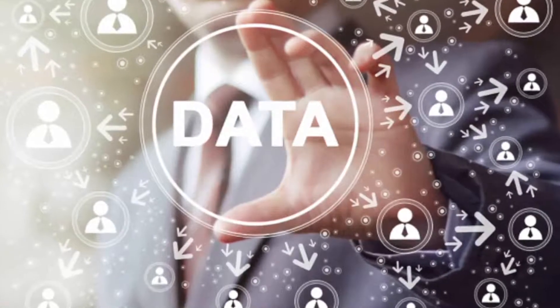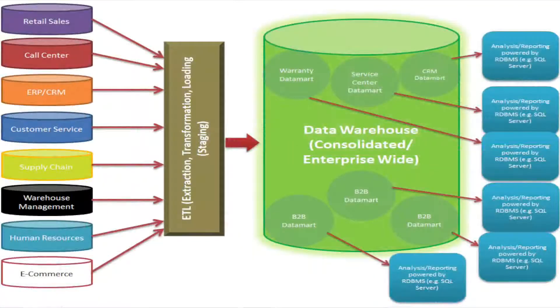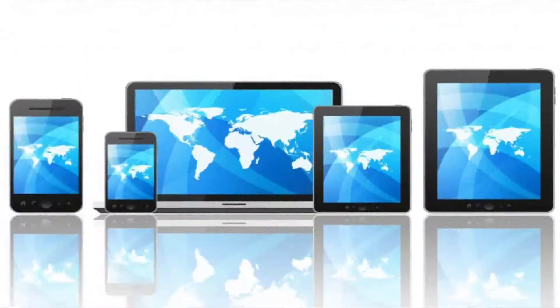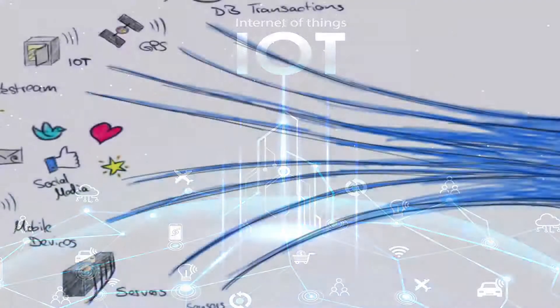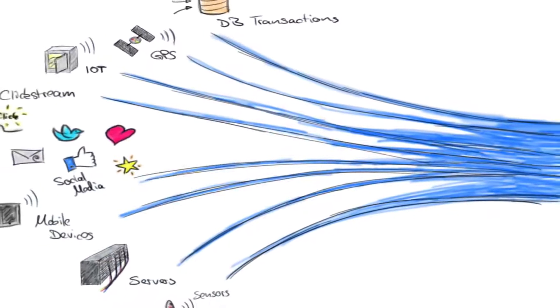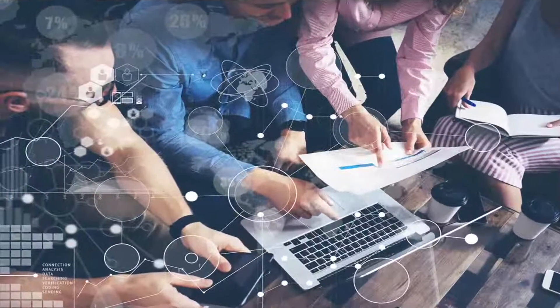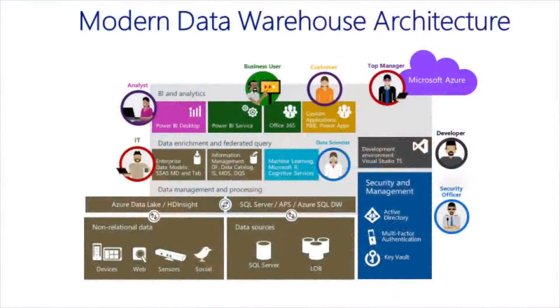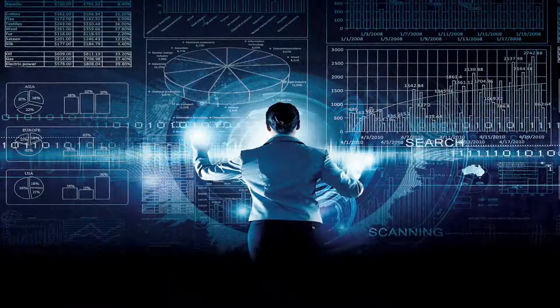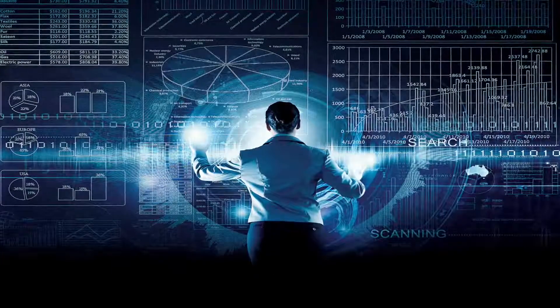The first trend is datafication. The datafication of the enterprise requires more capable data warehouses. Mobile devices, social media traffic, networked sensors — that is the Internet of Things, which is booming now — and other sources are generating growing streams of data. Information technology teams are responding by adding new capabilities to data warehouses so they can handle large volumes of new types of data in a faster manner.